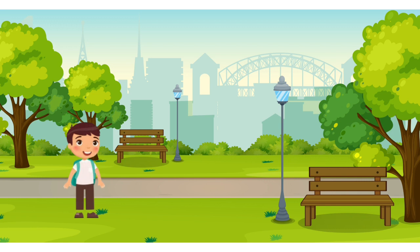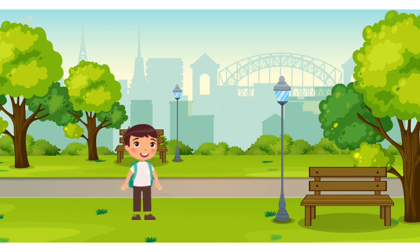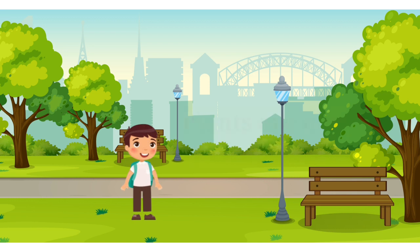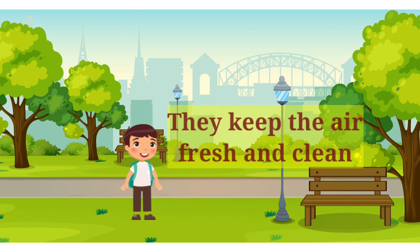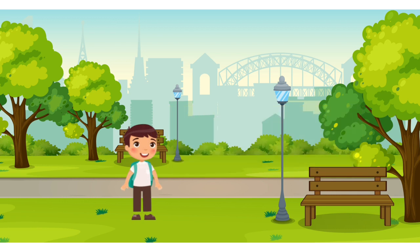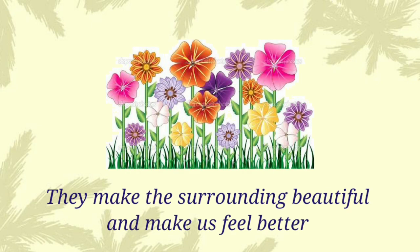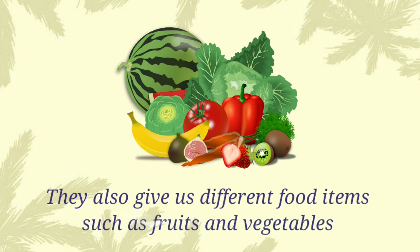Children, when we go to a park, we see a lot of greenery around the garden, right? This greenery around us is called plants. Do you know, plants are our green friends. They are all around us. They keep the air fresh and clean. They make the surroundings look beautiful and make us feel better. They also give us different food items such as fruits and vegetables.